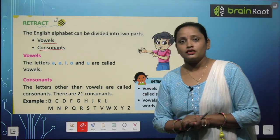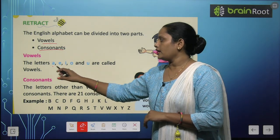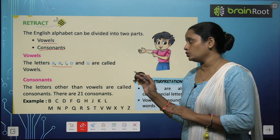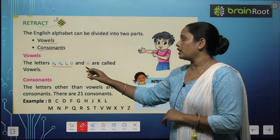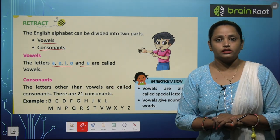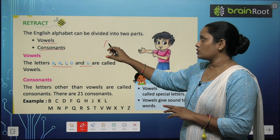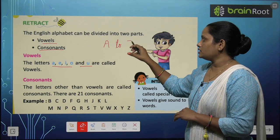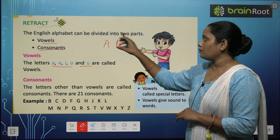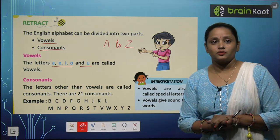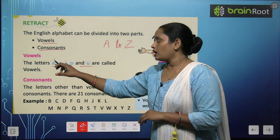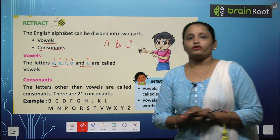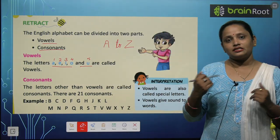What are vowels? The letters A, E, I, O, and U are called vowels. Now in 26 letters we have 1, 2, 3, 4, and 5 — these are five vowel letters from the English alphabet that we call vowels.